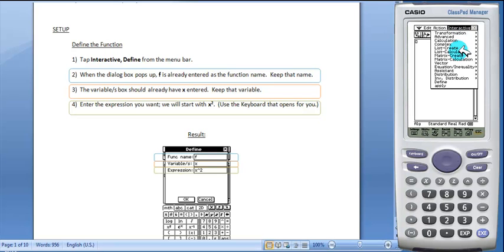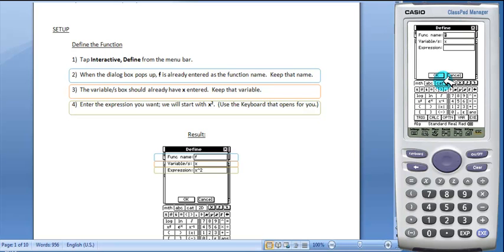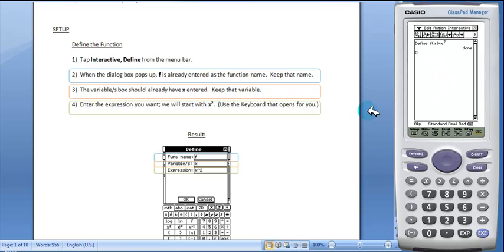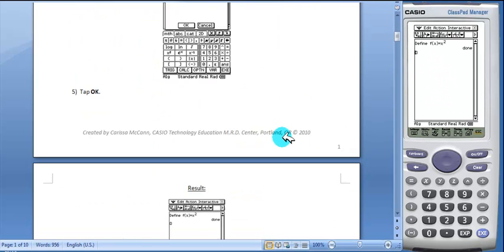So we'll tap interactive, define. When the dialog box pops up, f is already entered as the function name and x is the variable. You want to keep those two the same and we're going to enter x squared for the expression. Tap OK. And your result is on the screen.